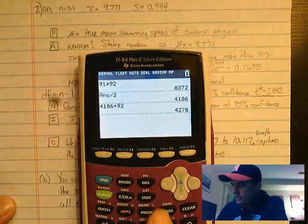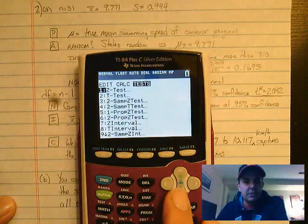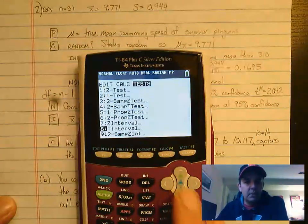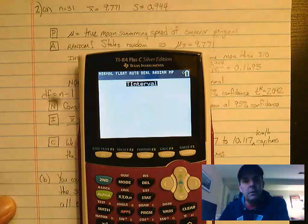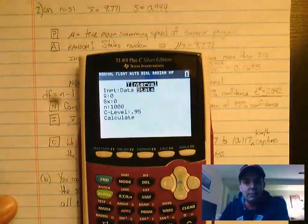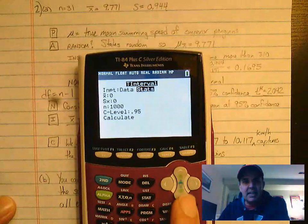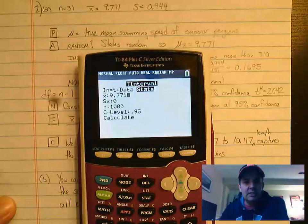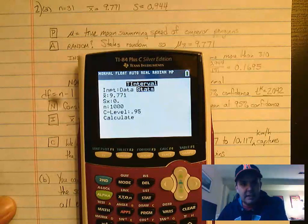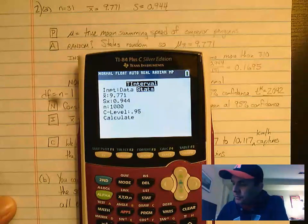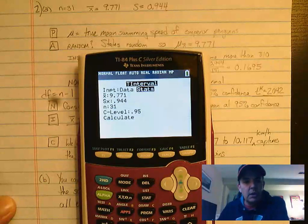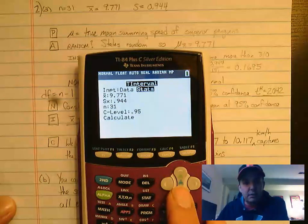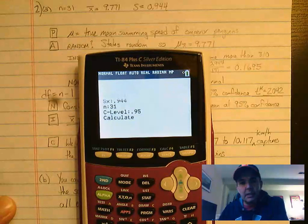We are going to do stat, test. In this case, we want to do number eight for t interval. We're going to do stats. The stats we're going to put in are the mean 9.771, the standard deviation 0.944, our sample size is 31.